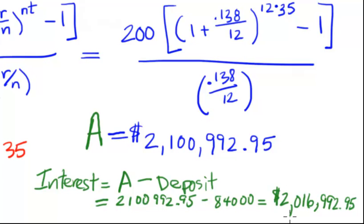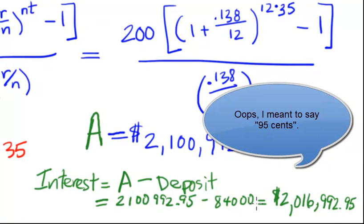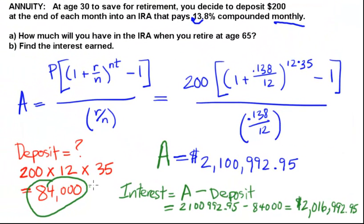This comes out to a little over $2 million. That's $2,016,992.85. That's how much money our $84,000 earned for us - it earned an interest of just over $2 million, almost $2,017,000 for us.